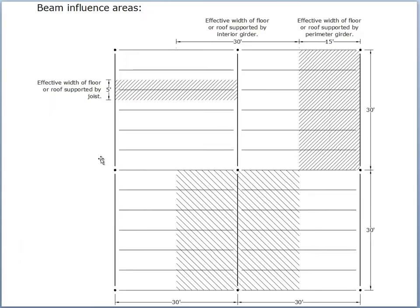We're working on a 30-by-30 column grid. The joist spacing is five feet, and the portion of the floor supported by the perimeter girder or single-loaded girder is 15 feet wide. The double-loaded girder supports a swath of floor that's 30 feet wide.